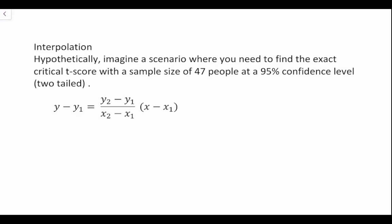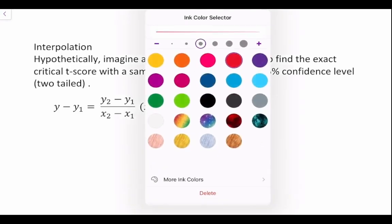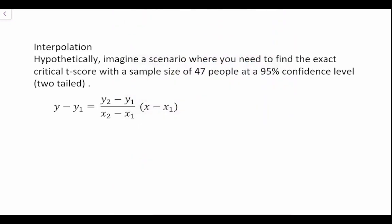Imagine a hypothetical scenario where you need to find the exact t-critical score with a sample size of 47 people at a 95% confidence level, and the question tells us that we're working with a two-tailed test.